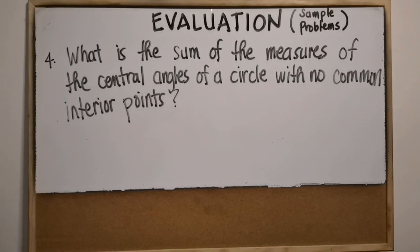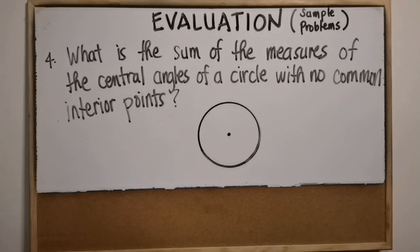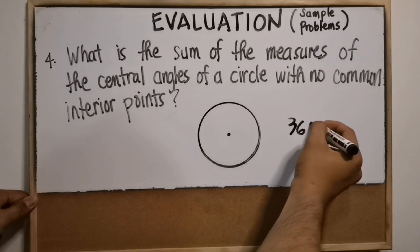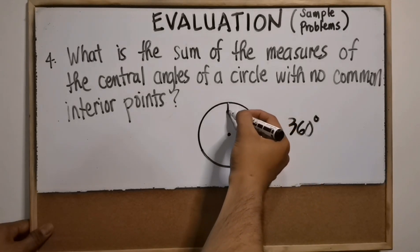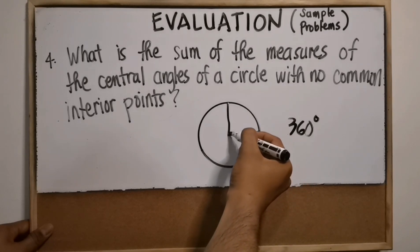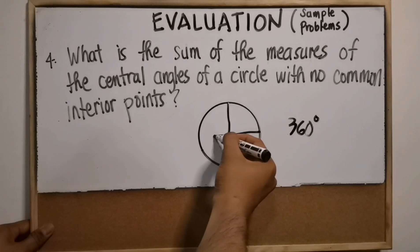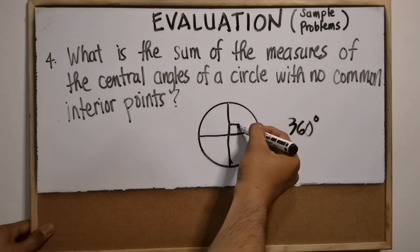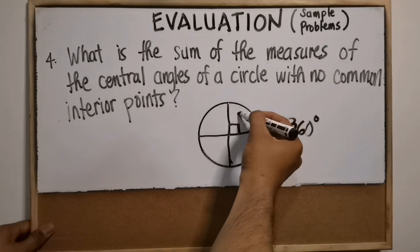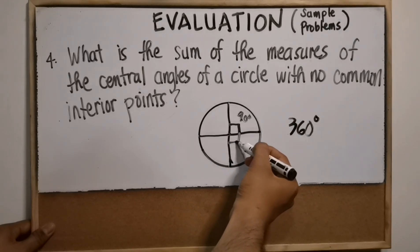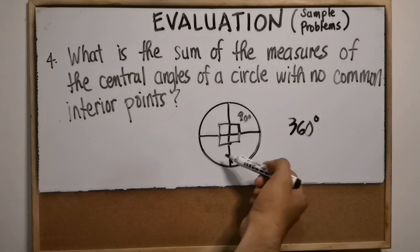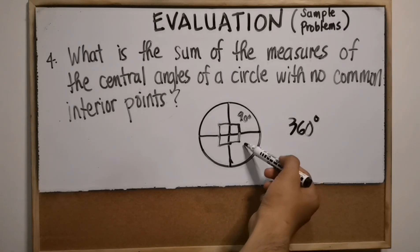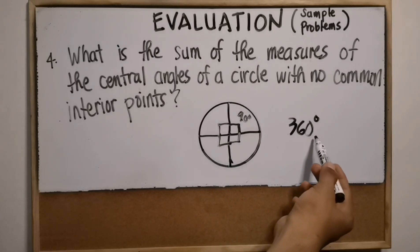Number four: what is the sum of the measures of the central angles of a circle with no common interior points? The answer is 360 degrees. Assuming we have a circle divided into four right angles, each measures 90 degrees. So 90 plus 90 plus 90 plus 90 equals 360 degrees.